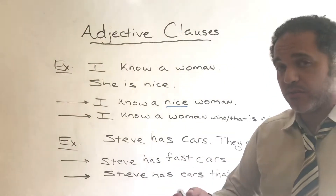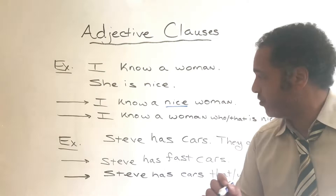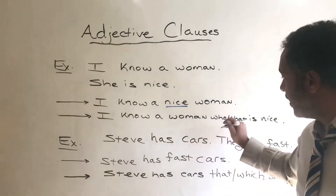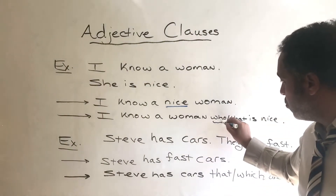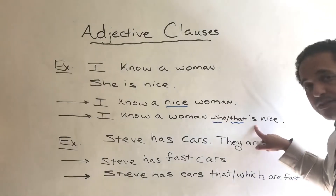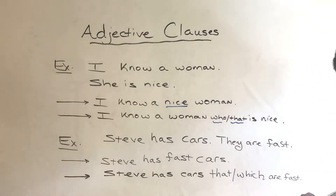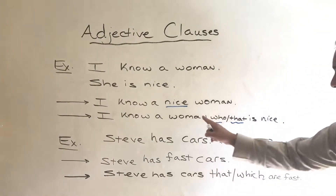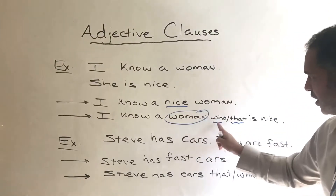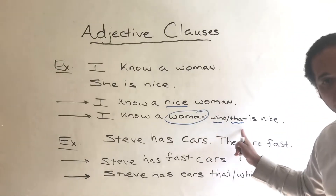Another way you can write it is by using an adjective clause. You can say 'I know a woman who is nice' or 'I know a woman that is nice.' When we are talking about people, we say 'who' or we can say 'that.'